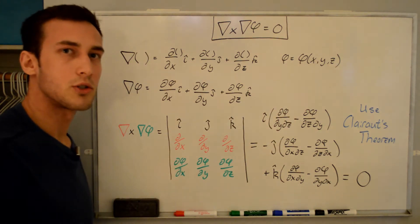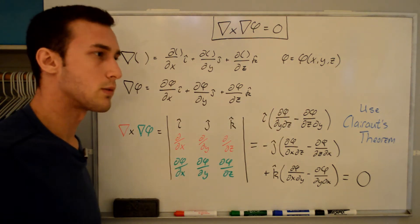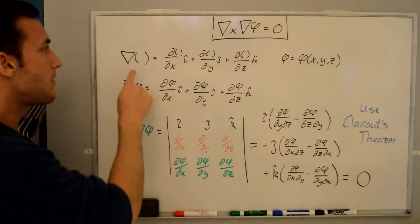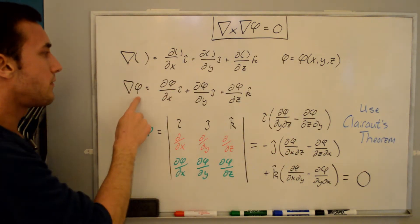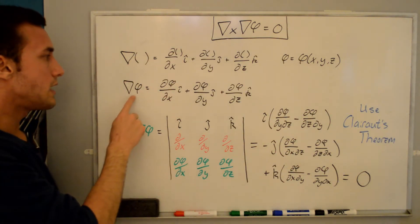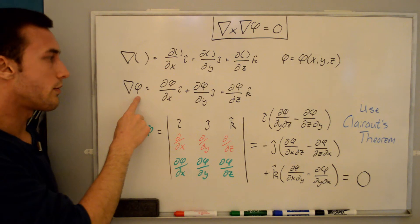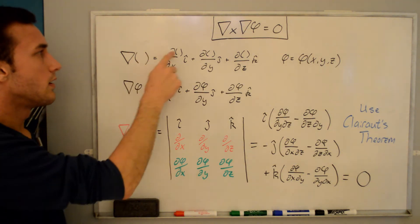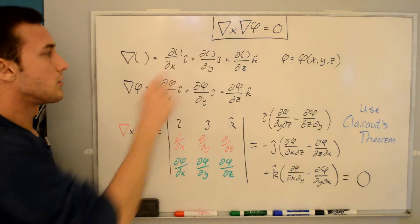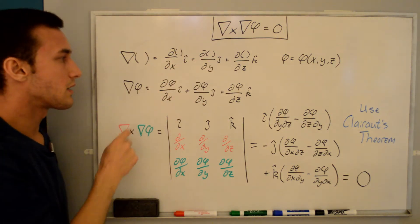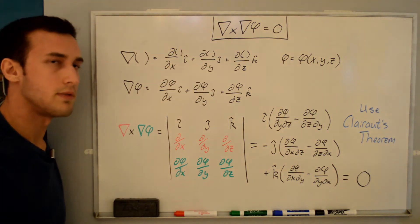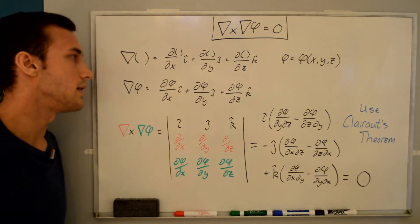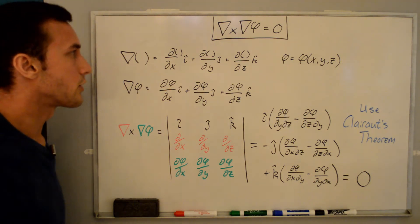Think about temperature — temperature is a scalar, but it can be different from here to here to here. Now if we apply the del operator to phi, so we're taking the gradient of the scalar phi, plugging phi into these positions, we have d phi/dx in the i-direction, plus d phi/dy in the j-direction, plus d phi/dz in the k-direction.